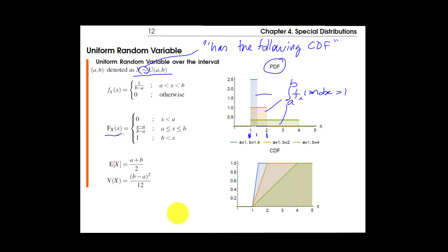When you integrate the PDF you obtain the CDF, given by a piecewise formula with three pieces. For any number less than a it must be zero — a very typical mistake is to just integrate from minus infinity, which is wrong. When x is greater than b it's just one. So the CDF follows the linear piece only between a and b.